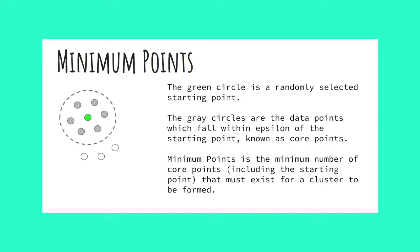Minimum points is the minimum number of core points, including the one starting point, that must exist for a cluster to be formed. In this example, there are seven points within epsilon of the starting point, including the starting point itself. Thus, if minimum points is set to seven or less, a cluster would be formed. However, if minimum points were set to eight or more, these data points could not initiate a cluster.